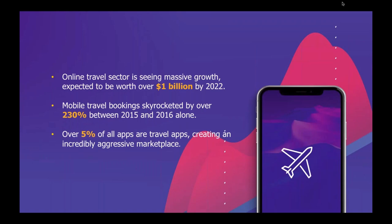We wanted to give you deep insights into these verticals. Now jumping over to the travel sector — another really interesting and growing vertical. We're seeing massive growth expected to be over $1 billion in 2022. Mobile travel bookings have increased over 230%, and over 5% of all apps are travel apps — a very aggressive marketplace for market share. For this data, we analyzed 55 billion events and their performance on more than a billion devices in 2018.